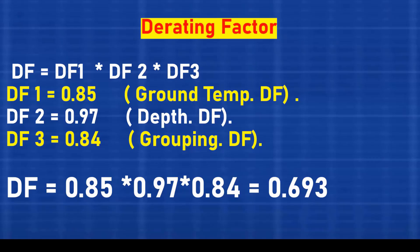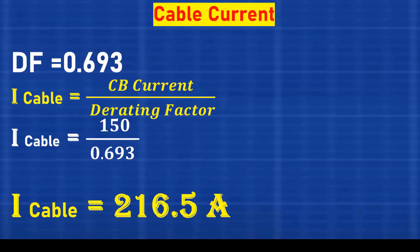Now, we calculate the required cable current capacity. By applying the formula, we get cable current equals circuit breaker current divided by total derating factor. Cable current equals 150 divided by 0.693, which equals 216 amperes.